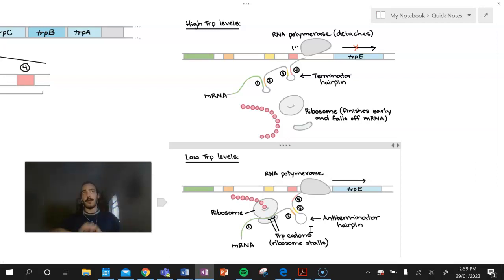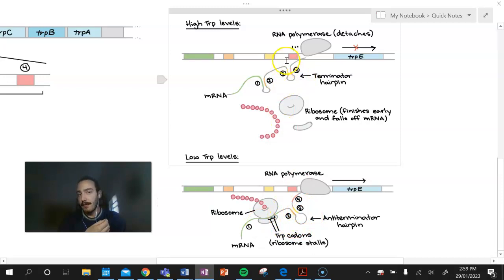You're sort of looking at your watch thinking, when's this TRP going to come? And as you're waiting for the TRP to be brought to finish off that leader sequence, this type of hairpin forms instead of this one.